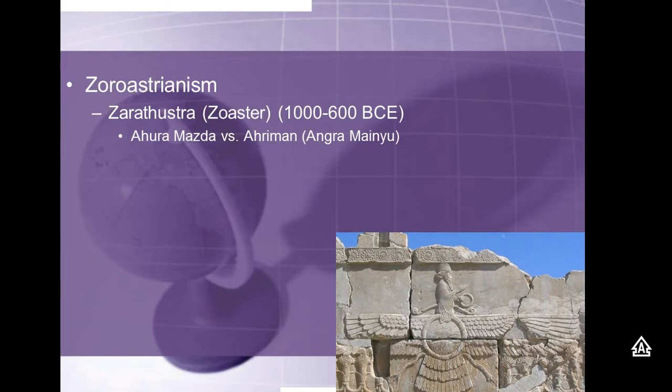In world history, this is one of the earliest mentions of a heaven. Even though the Egyptians believed in an afterlife, it wasn't necessarily a heaven — a different place. Zoroastrianism introduces this idea of a heaven, an afterlife that rewards you for the good you do on earth.